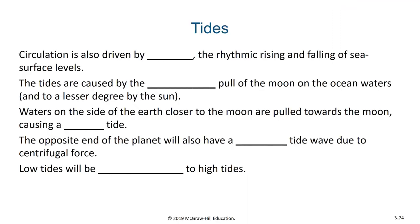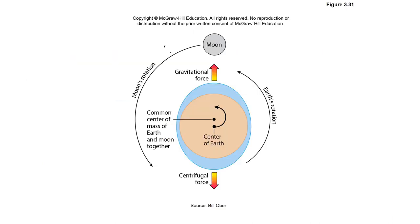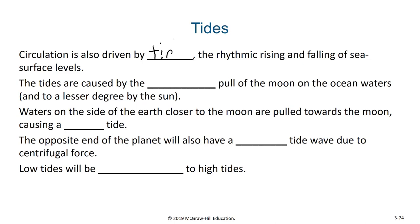Tides are actually a form of waves as well, but instead of being driven by the wind, these tides are driven by the gravitational pull of our moon. Tides involve the rhythmic rising and falling of sea surface levels. The tides are caused by the gravitational pull of the moon on ocean waters, and to a lesser degree by the sun as well.